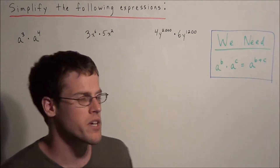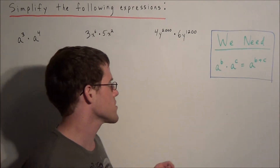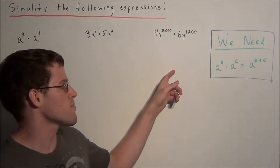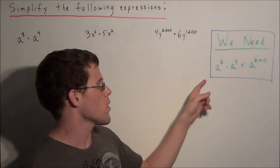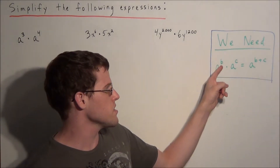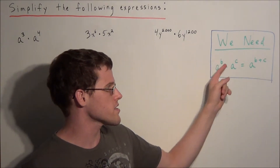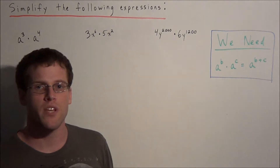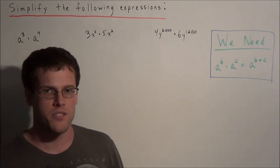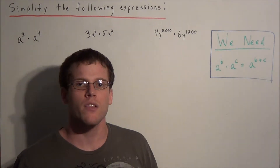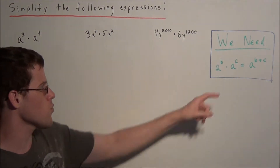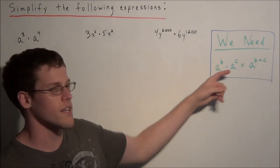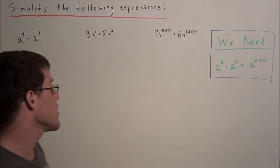For all these problems we can make use of the product of powers property for exponents, where a to the b times a to the c equals a to the b plus c. By looking at a few simpler examples we can see why this concept is true.